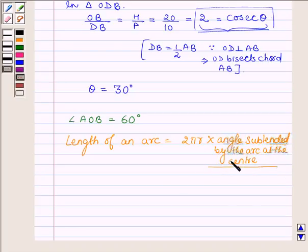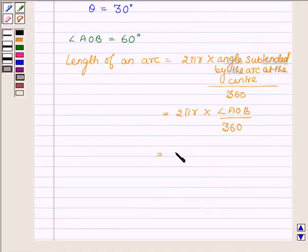Divided by 360, which is equal to 2πr into angle AOB upon 360, which is further equal to